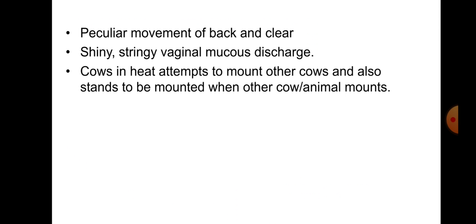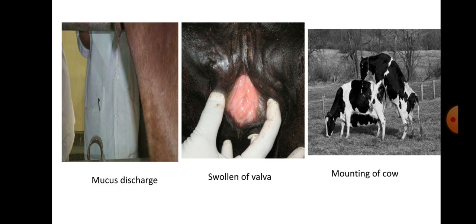Shiny and stringy vaginal mucus discharge is visible. A cow in heat will attempt to mount another cow. Also, the animal will stand to be mounted when another cow or animal mounts - this is called standing heat. You can see in this picture the mucus discharge from the vulva, and also the mounting of one cow onto another. These are the visible signs particularly associated with heat.